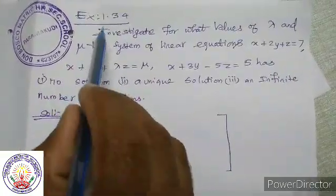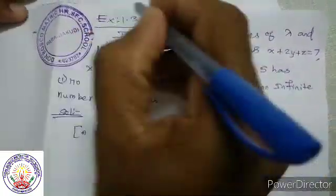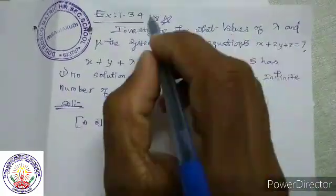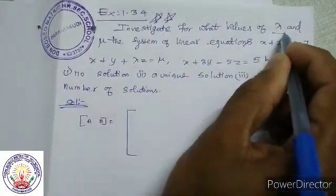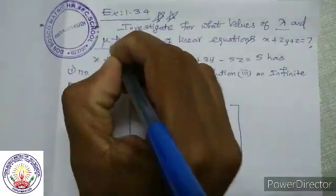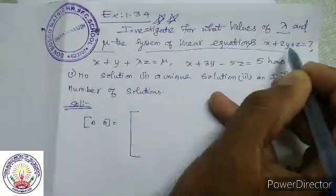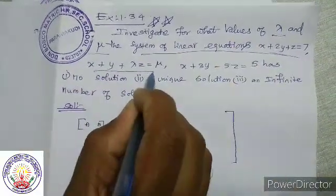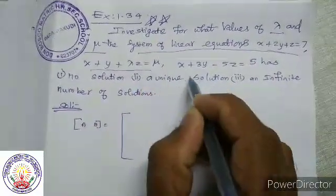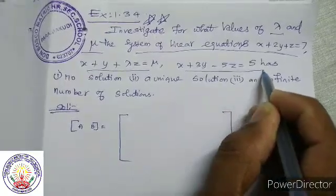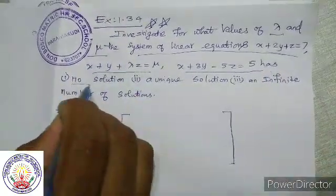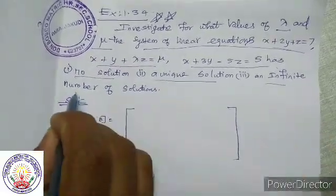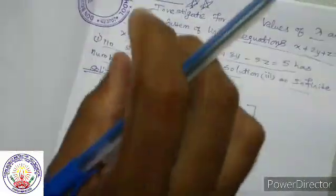Next sum, example 1.34. It is a very important sum. Investigate for what values of lambda and mu the system of linear equations has: number 1, no solution; number 2, unique solution; number 3, infinite number of solutions.